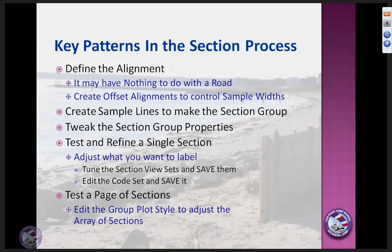The key process pattern: you need a defined alignment. They tell you this but don't really help you out — pretty much every time you're going to create sections, you'll also want a pair of offset alignments to control the sample width, unless you want everything to be the same width. A site section is no different from a roadway section in this context — you still need the alignment, the section line groups, and you still need to create the sample lines.